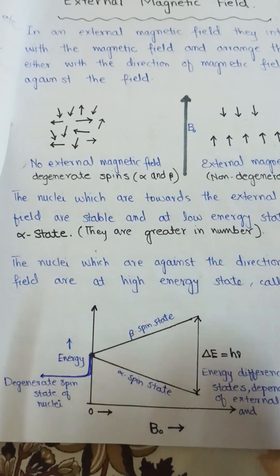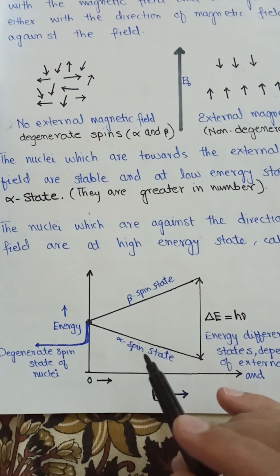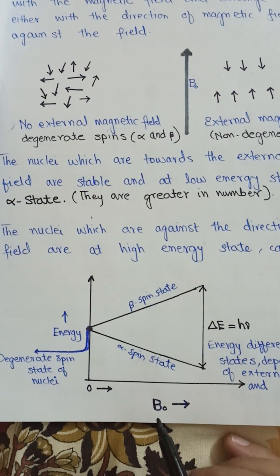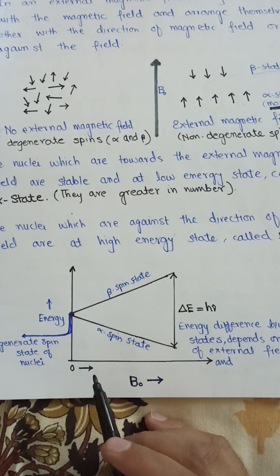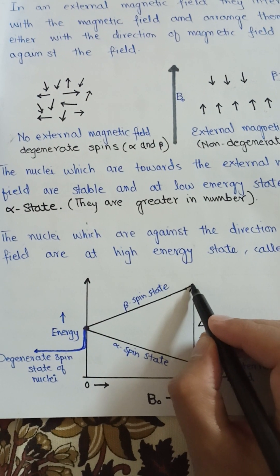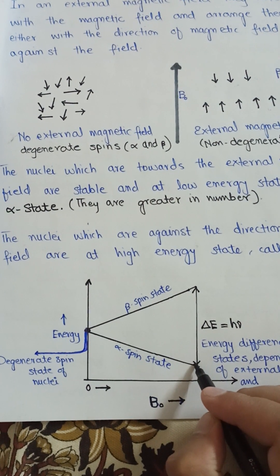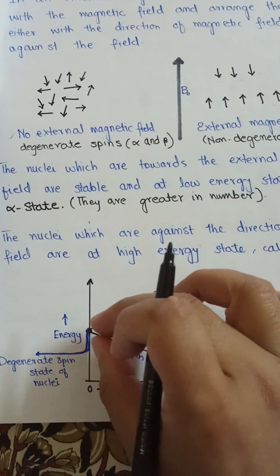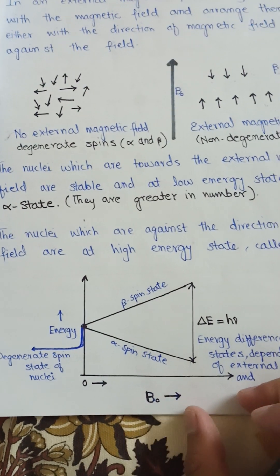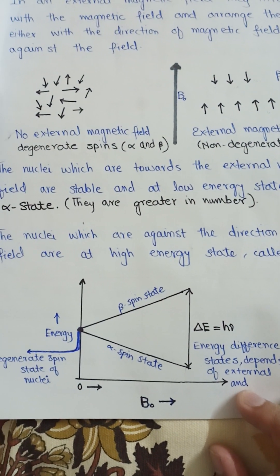When an external magnetic field is applied, the splitting of these two spin states depends on the strength of the magnetic field. Nuclei against the direction of the magnetic field are at a high energy level — these are the beta spin states — while the alpha spin states are at a low energy level. The gap between these two spin states increases gradually with the increase of magnetic field strength, so the energy difference between the two spin states depends on the strength of the external magnetic field.